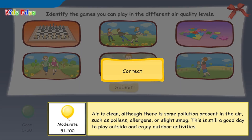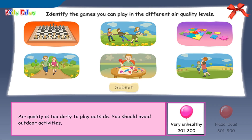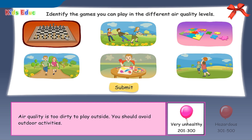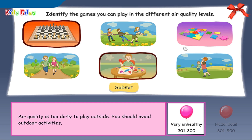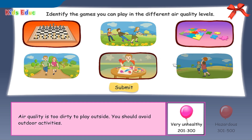Correct! Purple — very unhealthy — 201 to 300: indoor activities, indoor activities, indoor activities. Correct!